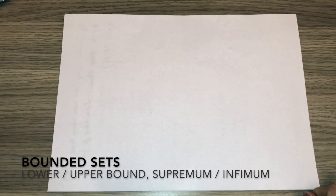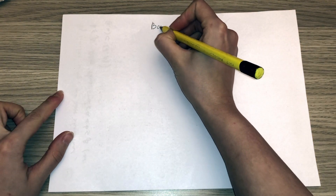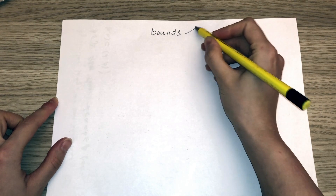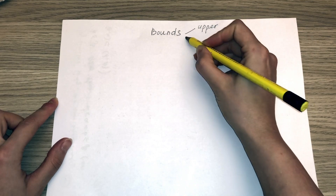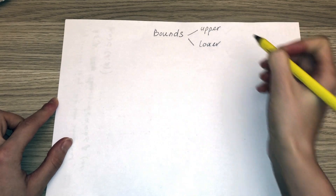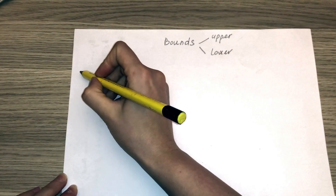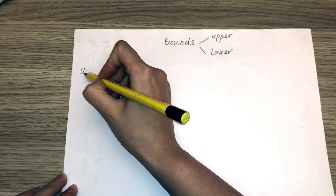In today's lesson we will talk about bounded sets. In our previous lesson we learned about limit points and isolated points, which you can check on my channel. Now let's start. There are two types of bounds: upper bound and lower bound.